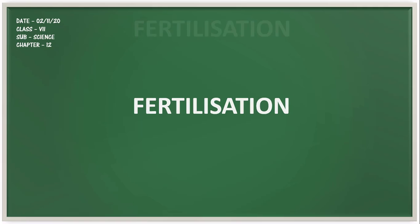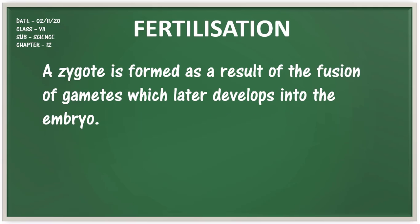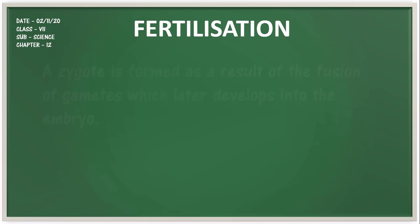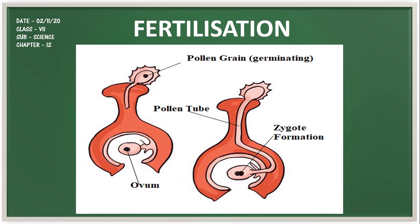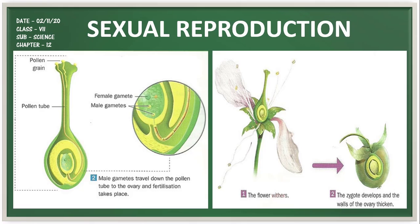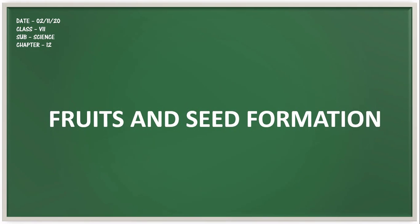Now let's study fertilization. Male and female gametes fuse to form a zygote, which later develops into the embryo. Fruits and seeds are formed post-fertilization — the ripened ovary becomes a fruit, and ovules give rise to seeds which contain the embryo in a protective covering.